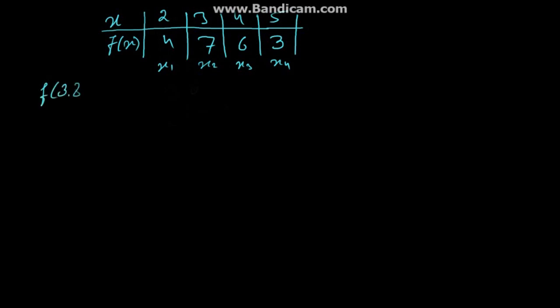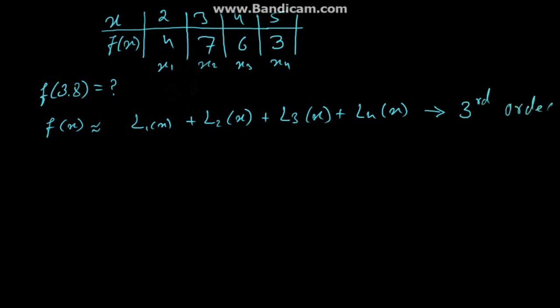Now to find the function at x equal to 3.8 we take Lagrangian interpolations. And Lagrangian interpolation, f of x equal to L1 of x plus L2 of x plus L3 of x plus L4 of x. And let me tell you that Lagrangian interpolation can be of order 1st, 2nd, 3rd or 4th depending how many points you take in considerations.